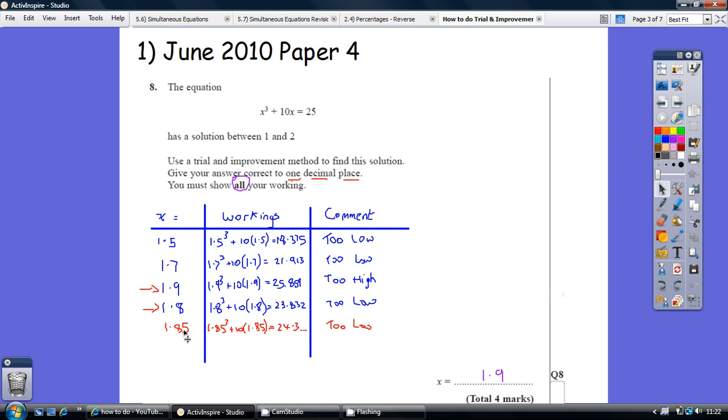So now we can safely say, if our true solution is bigger than 1.85, it must be 1.9, not 1.8. So now we can do the answer.